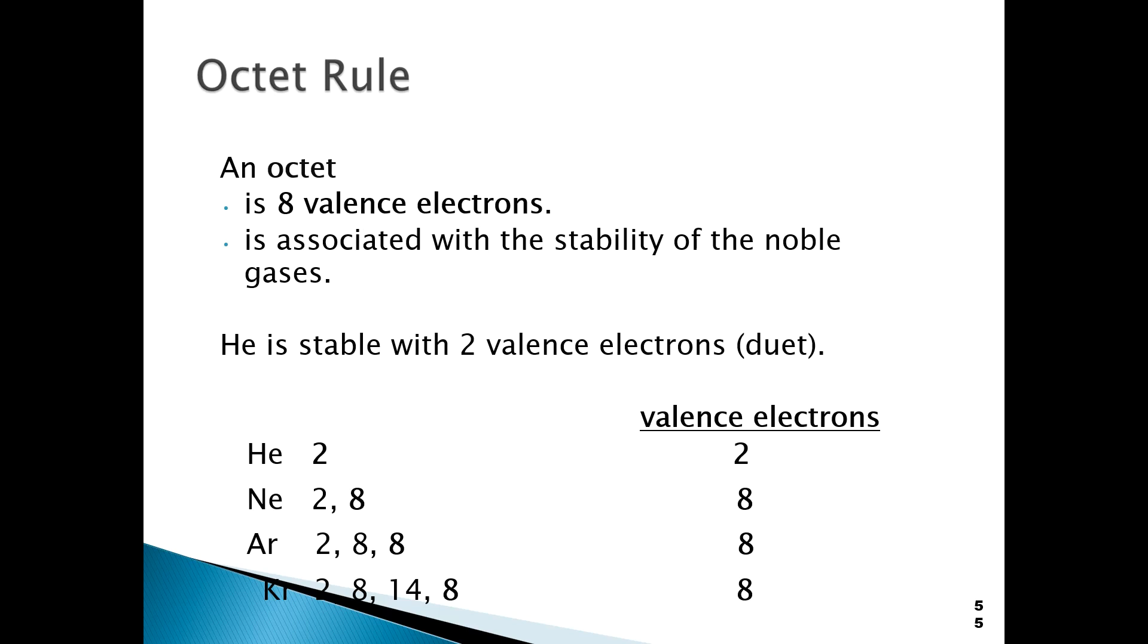So now we're going to get into what is known as the octet rule. The octet rule is basically a reflection of the fact that it was observed that structures that have eight valence electrons tend to be stable. The same is true for structures that have two valence electrons. But the octet rule, of course, refers to eight, which is in most cases. If you look at the elements in group 8, the group furthest to the right of the periodic table, those elements have eight valence electrons.